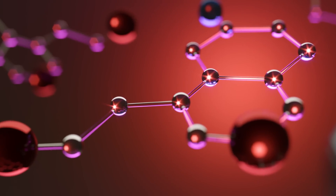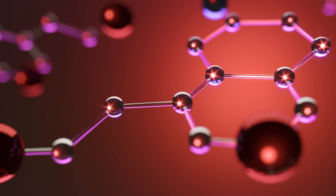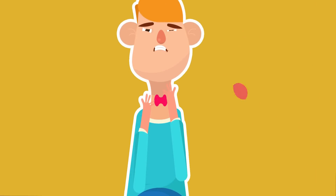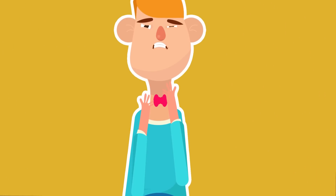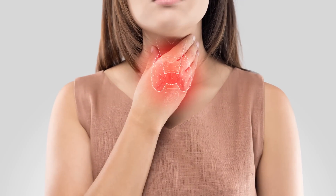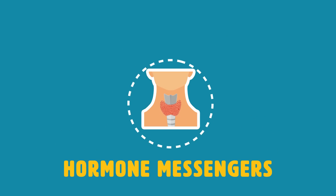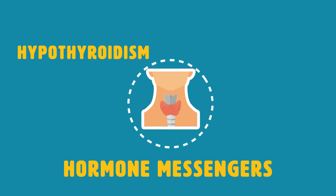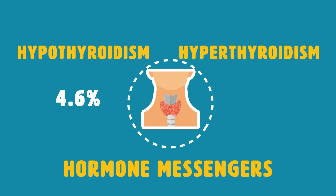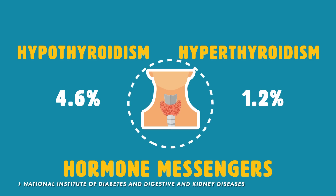Our hormones can be difficult to deal with at times, but it's because of them that our different bodily systems have the ability to talk to each other. You may or may not know the symptoms associated with thyroid disorders — they are the most dominant of the endocrine disorders. Hypothyroidism affects 4.6% of the U.S. population, and hyperthyroidism impacts 1.2%, according to the National Institute of Diabetes and Digestive and Kidney Diseases.